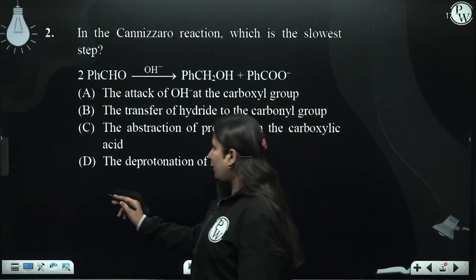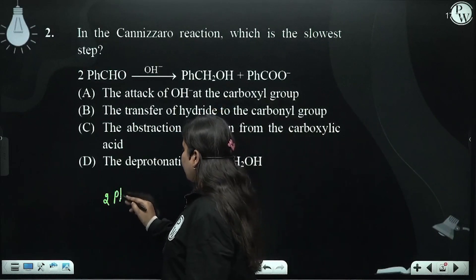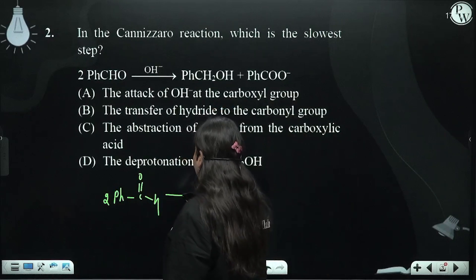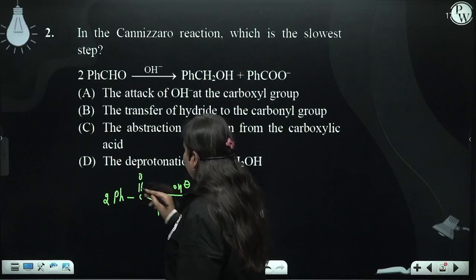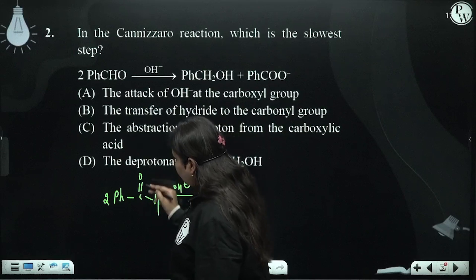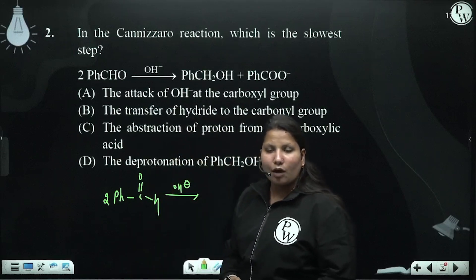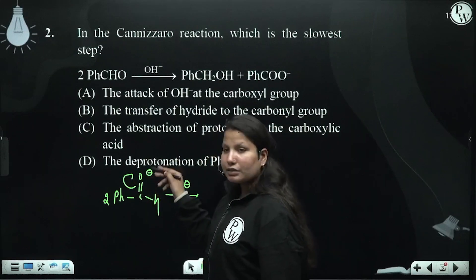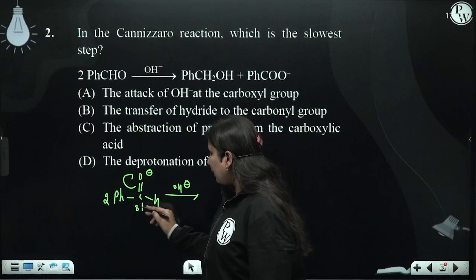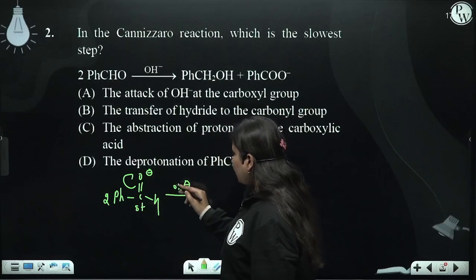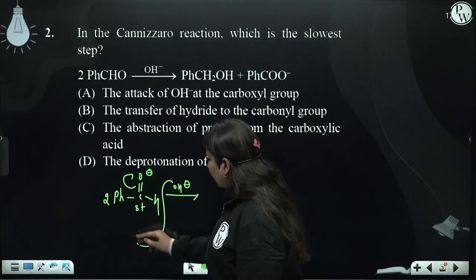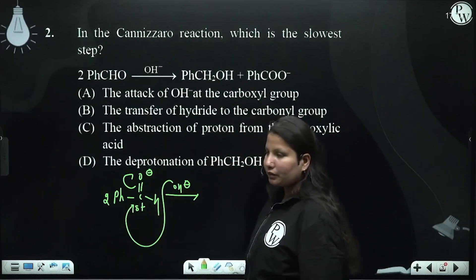So we will write 2 PhCHO. Okay, which reaction will we try? Here you can see the electronegativity - carbon versus oxygen. So where do we shift the pi electrons? To oxygen. And here what will happen? Electron deficiency. And this OH minus, which is the base - what does it attack? This carbon.